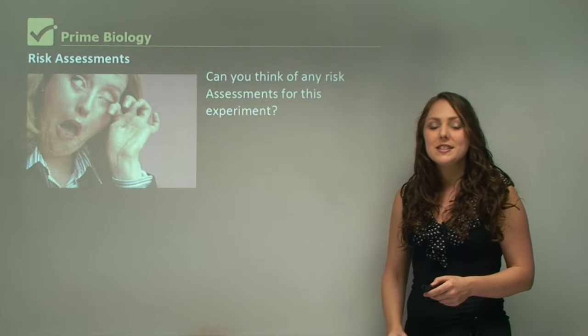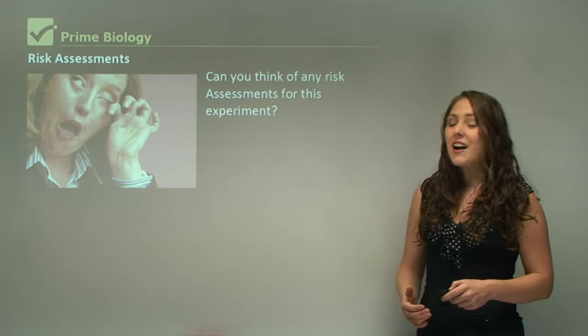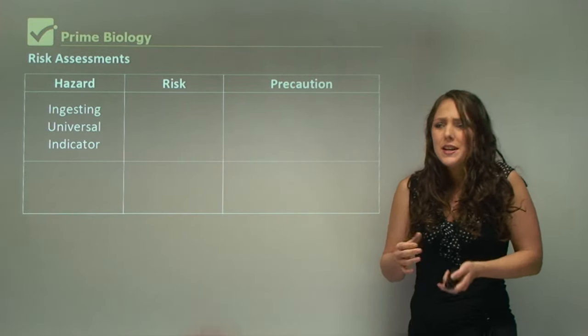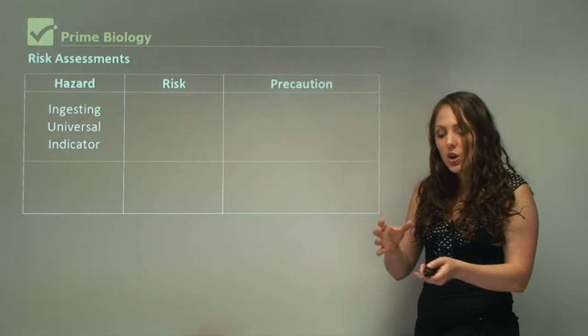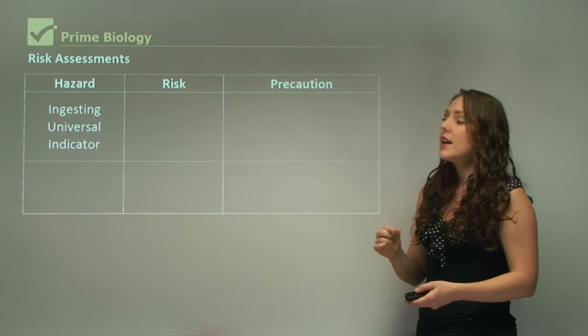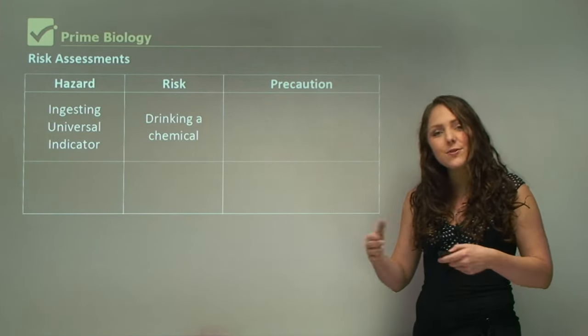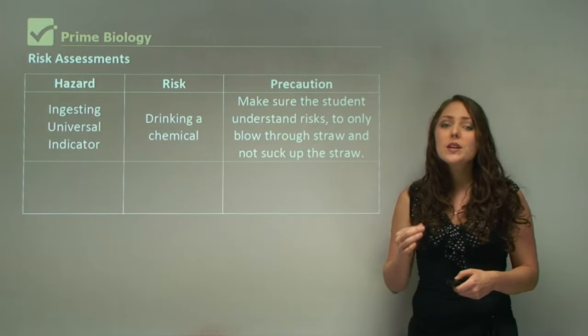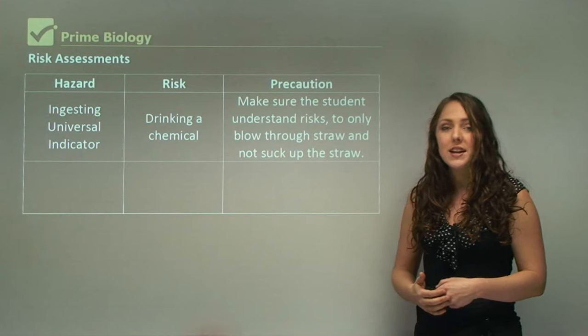Risk assessments. For every assessment task, you need to look at risk assessments. Can you think of any risk assessments for this experiment? There are quite a few, but we'll look at two. The first one is when you use a straw, we're so used to sucking up a straw. We never breathe through a straw. When you suck up a straw, it's just an instinct. So we need to get a beaker, and you need to be very mindful when doing this experiment. You need to only breathe through the straw, because the problem with sucking is that you can ingest universal indicator. The risk is you're drinking a chemical, and it can have toxic effects on your body. Different universal indicators have different levels of toxicity. The precaution: make sure the students understand the risk and to only blow through the straw and not suck up the straw. It's very important that the student performing the experiment understands the risks beforehand.